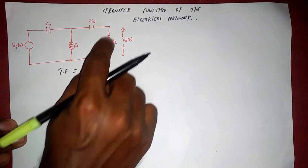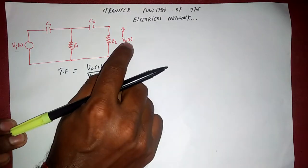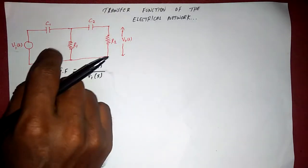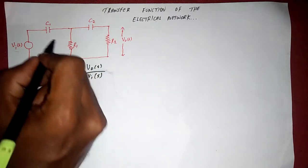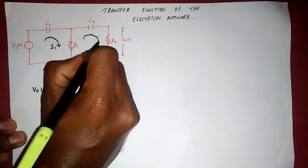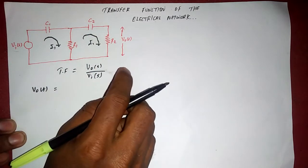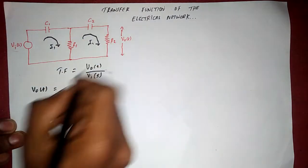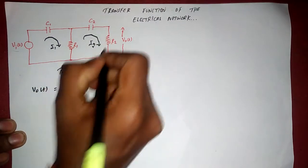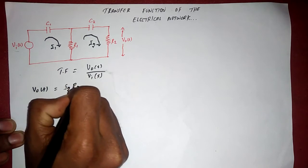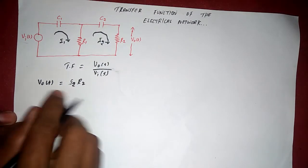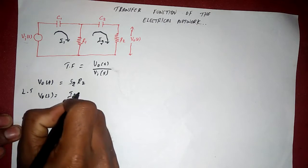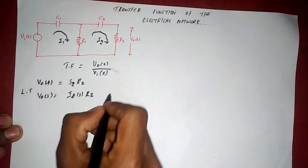First I am going to write the equation for V0(s). In the time domain, V0(t) is written using mesh analysis. I am taking two loops — I1 and I2 in the clockwise direction. The voltage V0(t) equals i·R, so V0(t) = I2(t)·R2. Taking the Laplace transform: V0(s) = I2(s)·R2. This is my first equation.